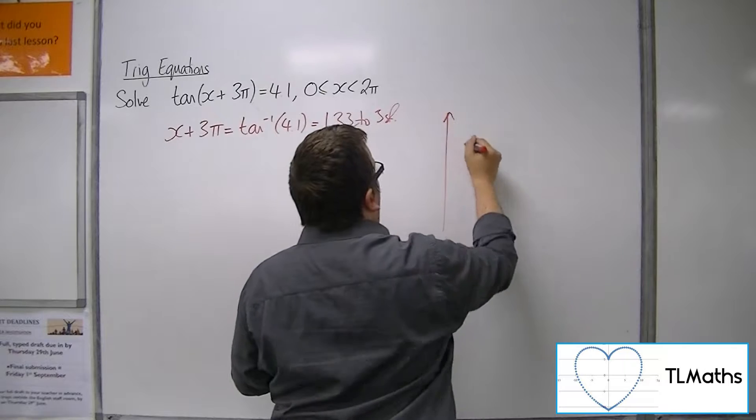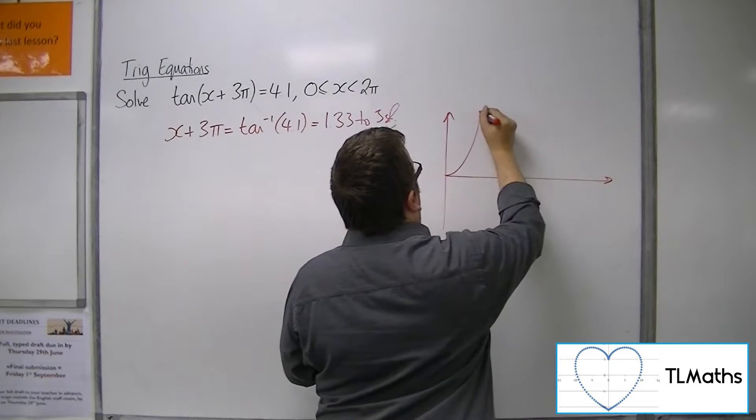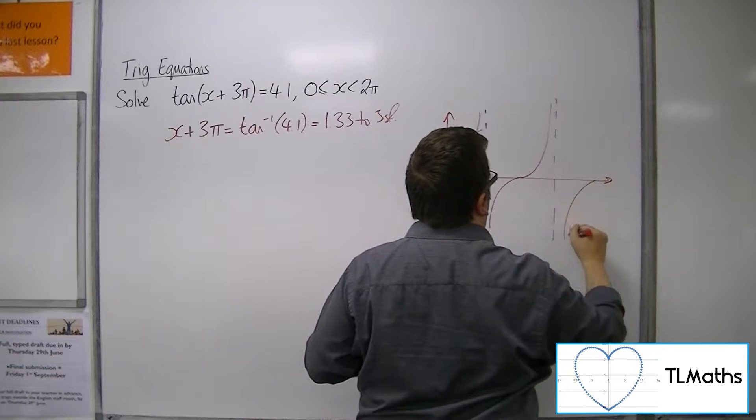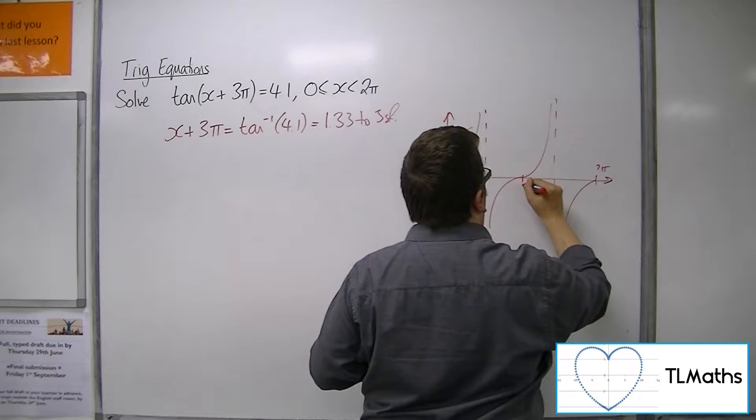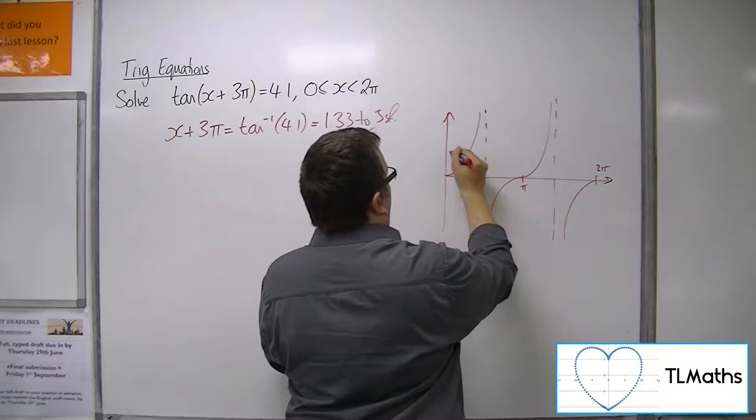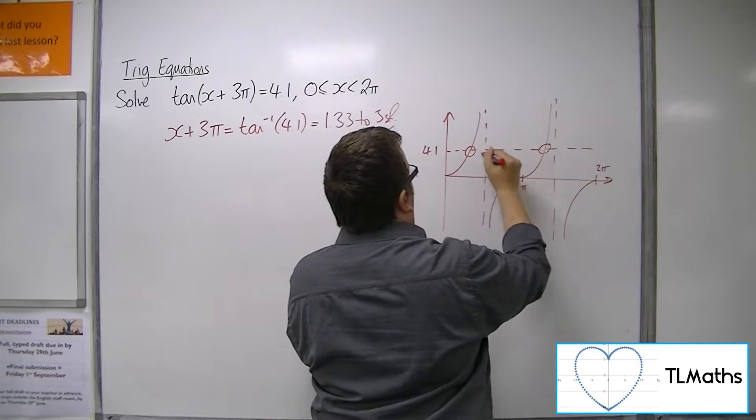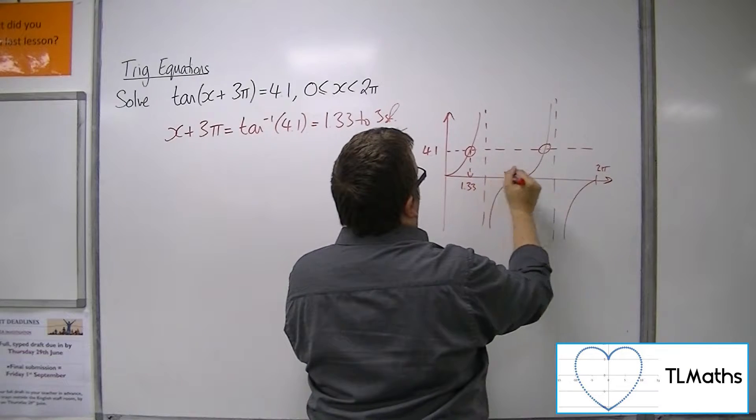So then sketch tan between 0 and 2π. So 4.1 is up there, so there's going to be two solutions. I've just found one of them, 1.33.